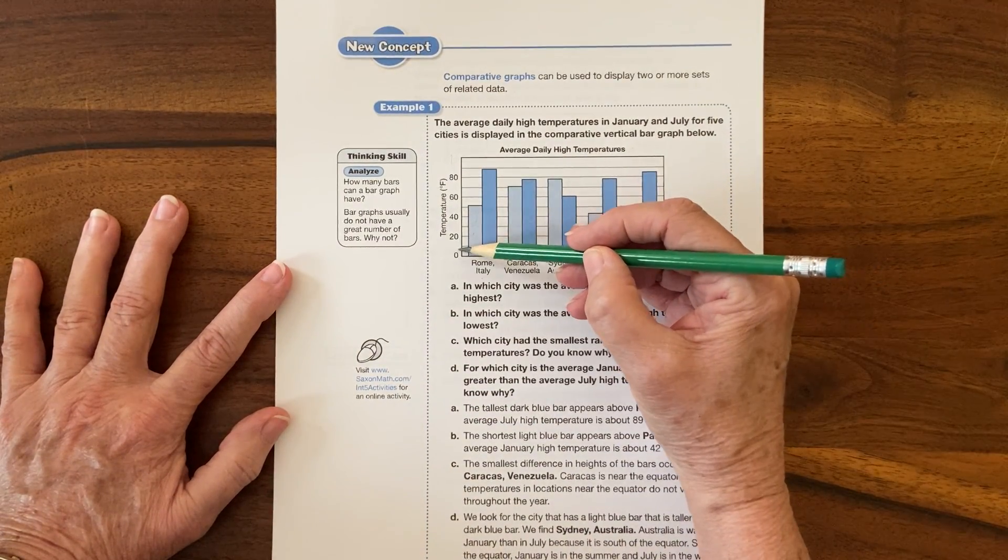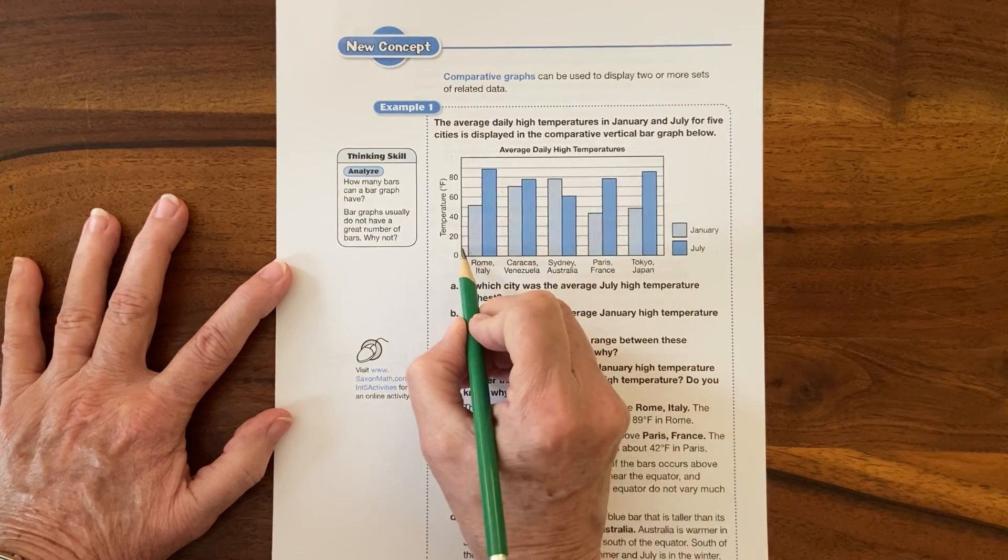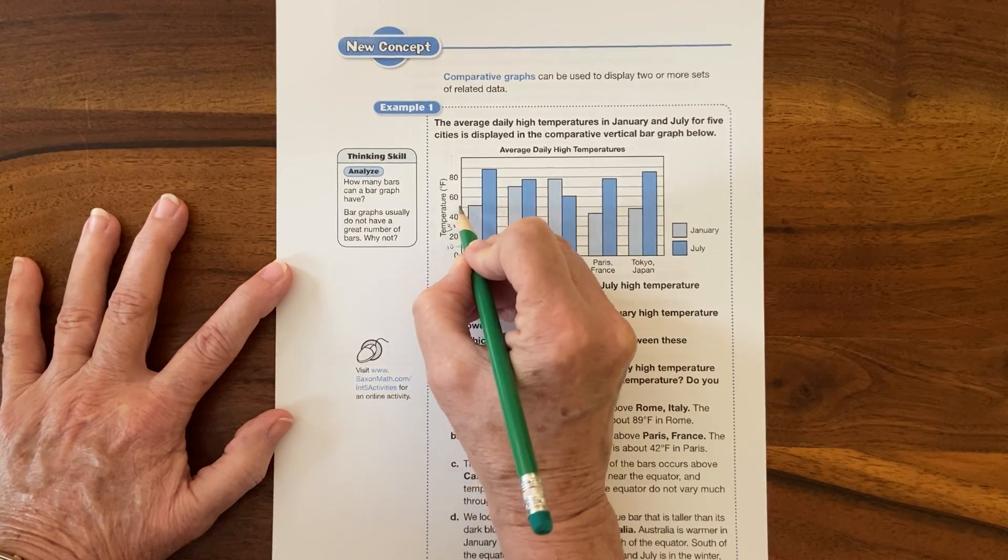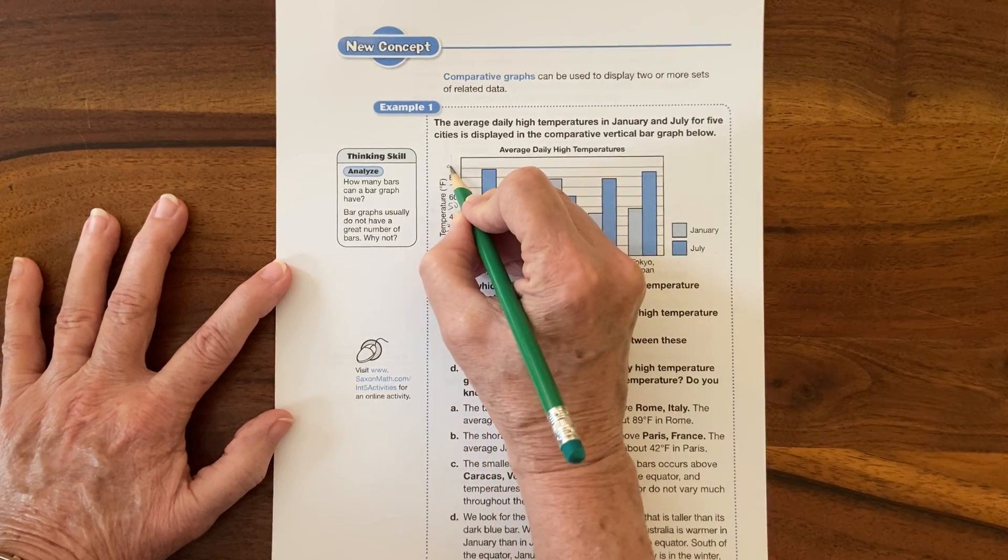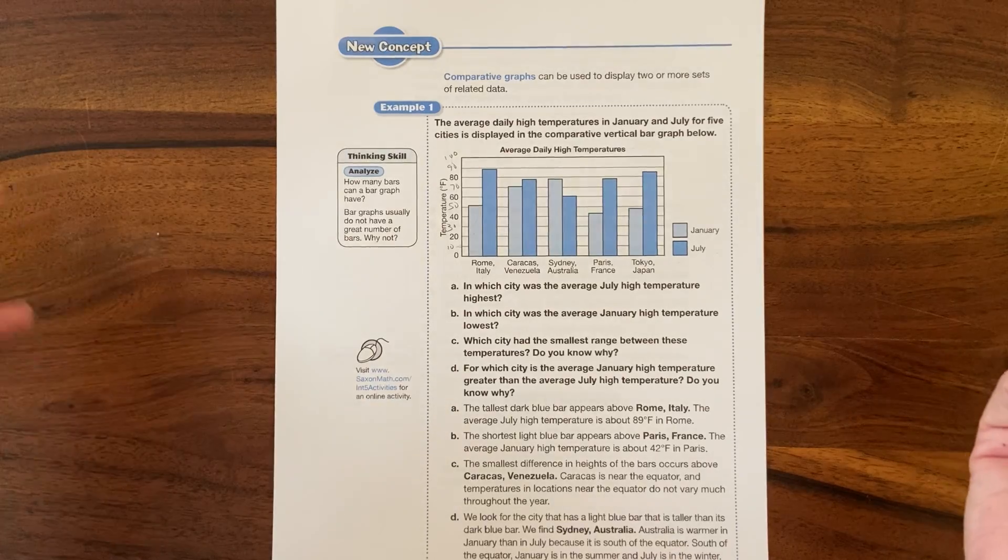Remember if they skip a line, these are equal intervals always on a graph. So remember that is 10, 20, 30, 40, 50, 60, 70, 80, 90, and this goes up to 100. You can fill it in if you want to, you don't have to.